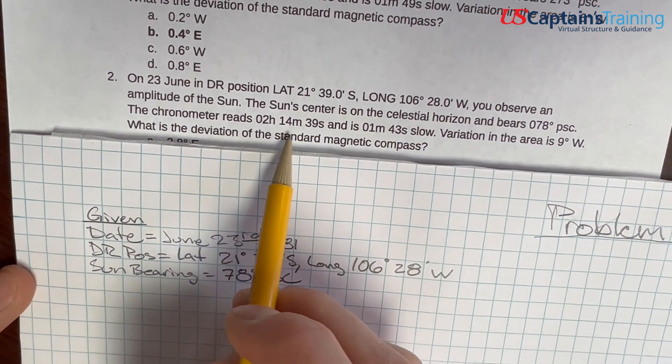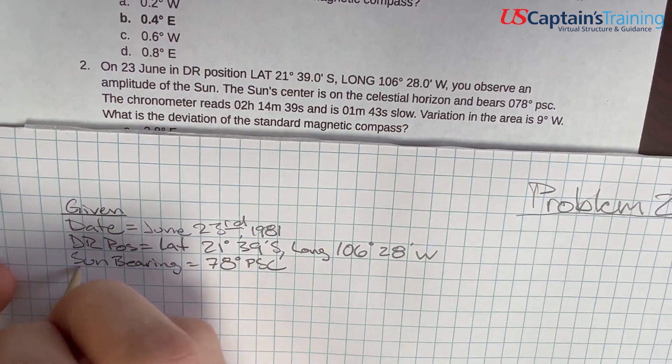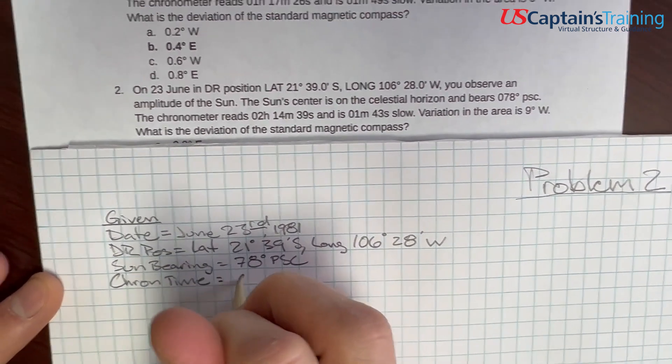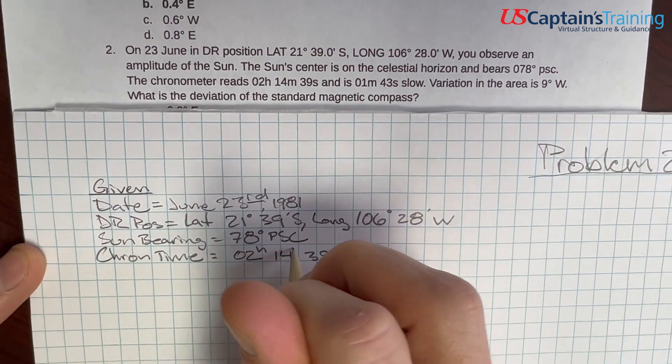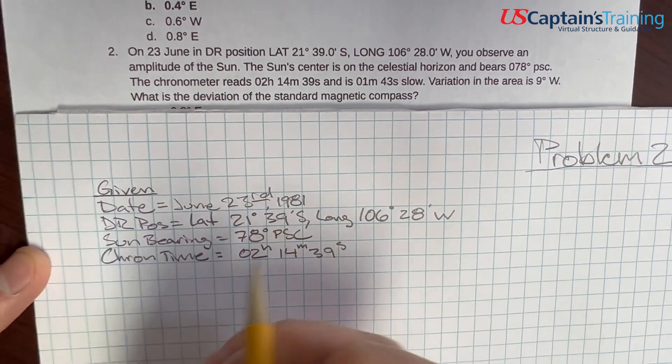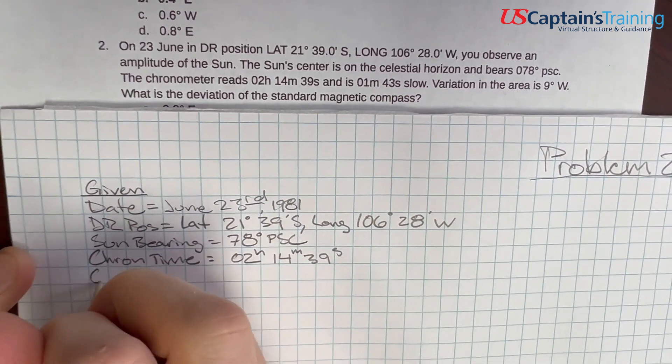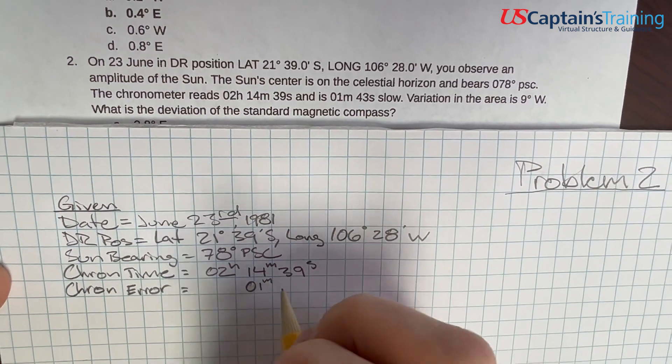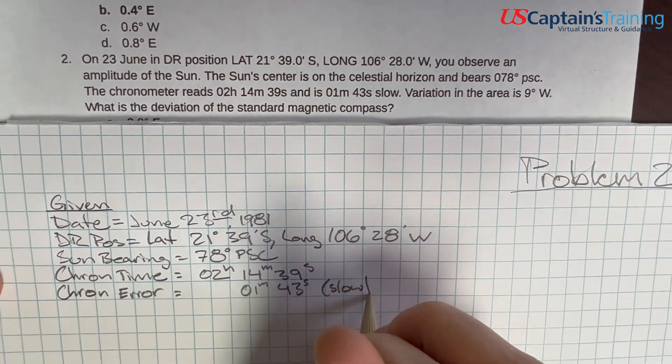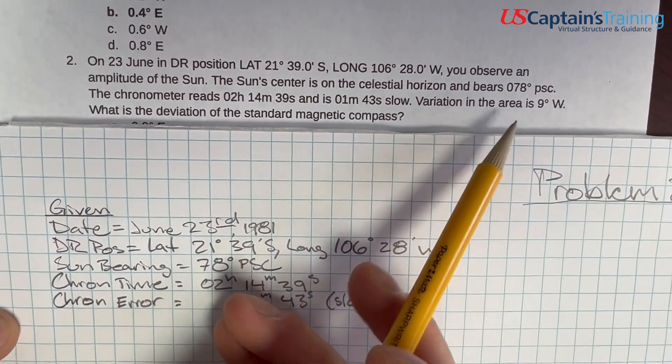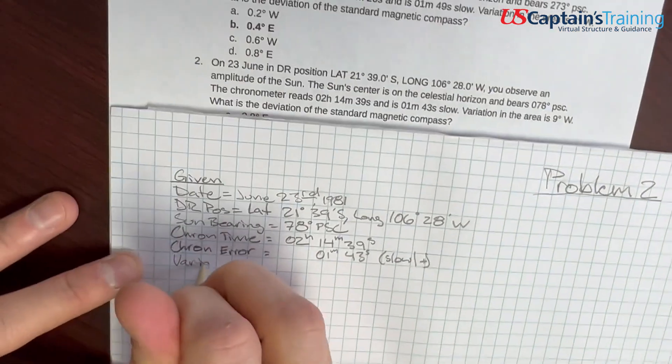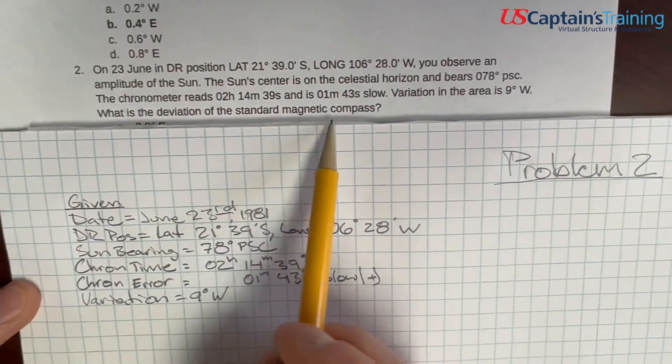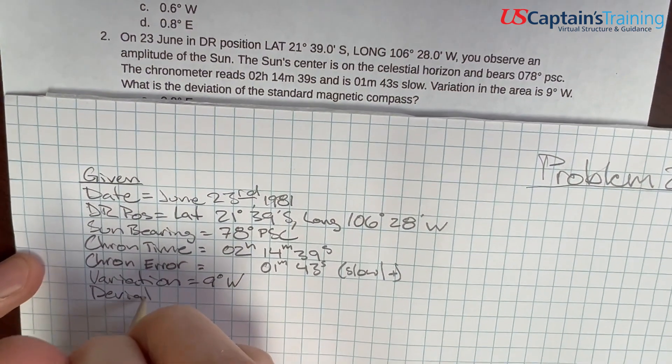The chronometer reads 02h 14m 39s and is one minute 43 seconds slow. So the chronometer error equals one minute 43 seconds slow, which means we add it. Variation in that area equals nine degrees west. And then it asks, what is the deviation of the standard magnetic compass? That's what we're solving for.